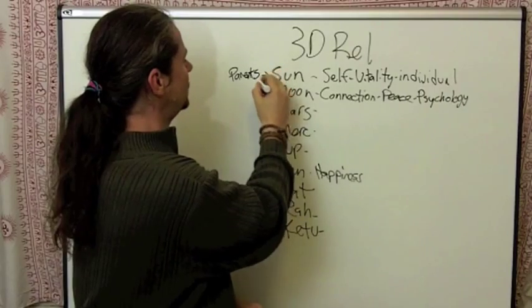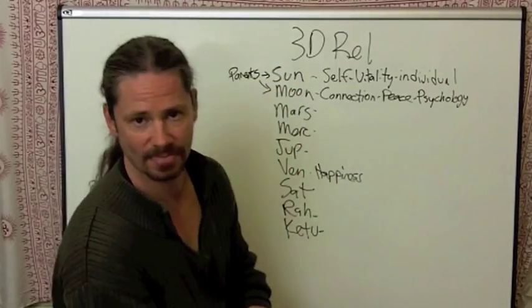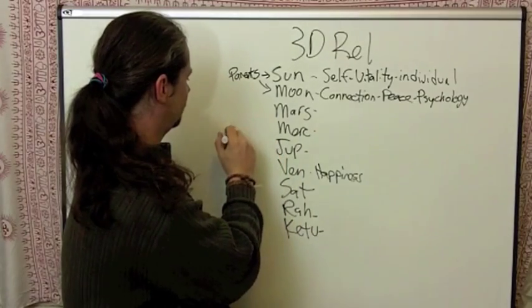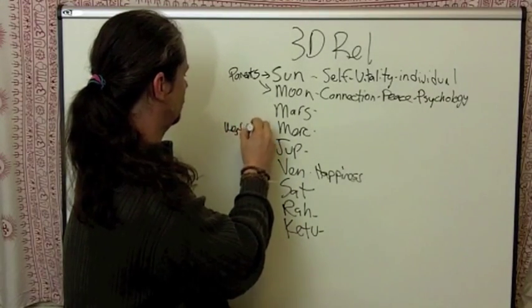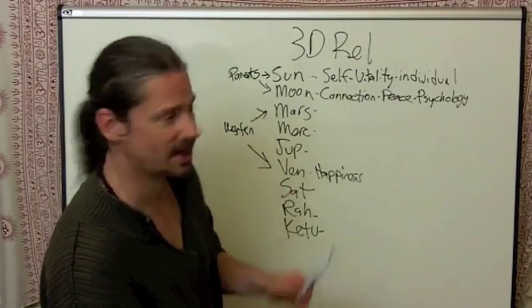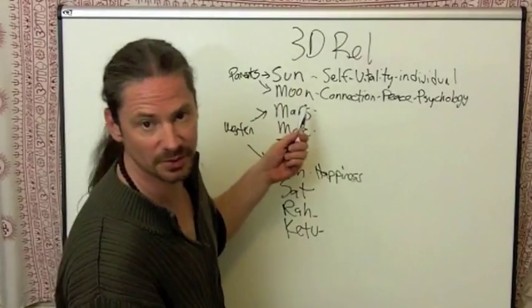And actually, our relationships, it was said that men are from Mars, women are from Venus. This is Western paradigm. The Vedic paradigm is men are from the sun, women are from the moon.